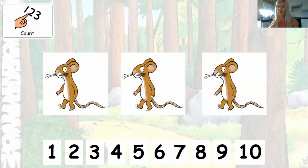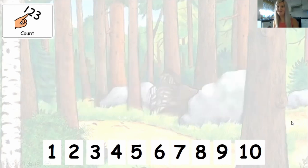There are three mice. Can you find the number three at the bottom? Which one is it? I'm not sure. I know, I can count. Ready? One, two, three. That is number three. Good starfish.